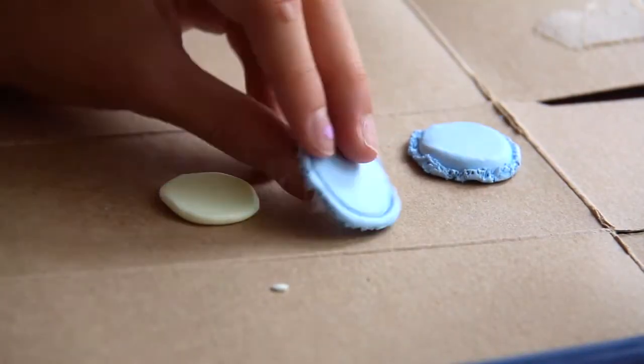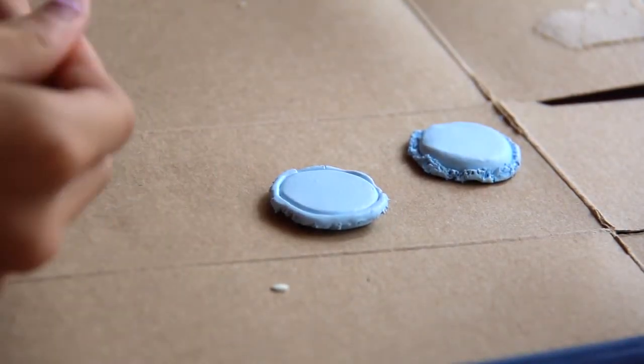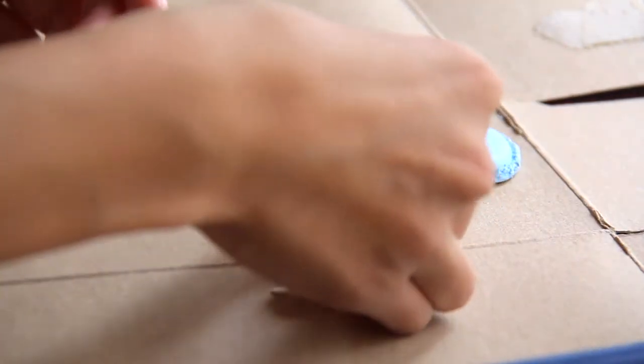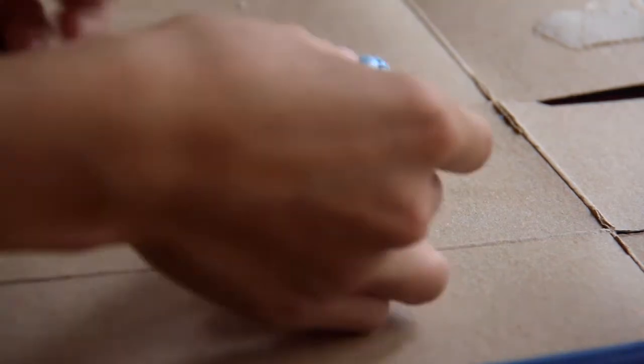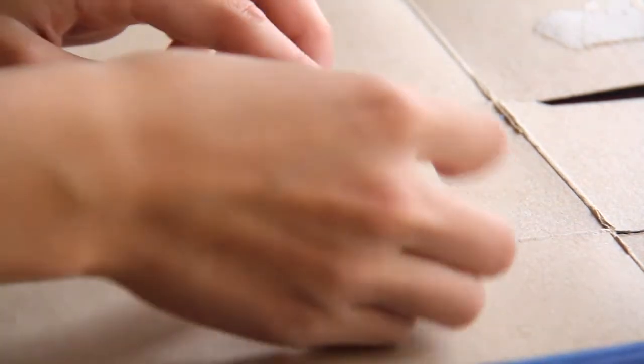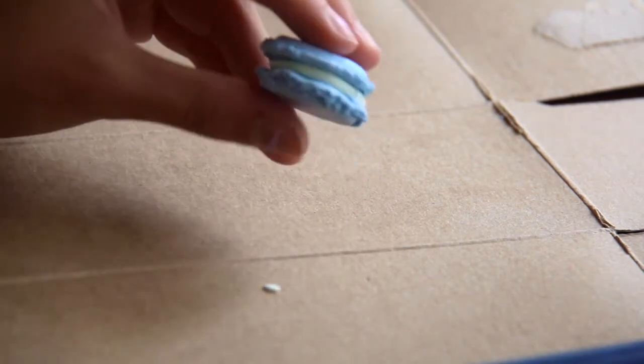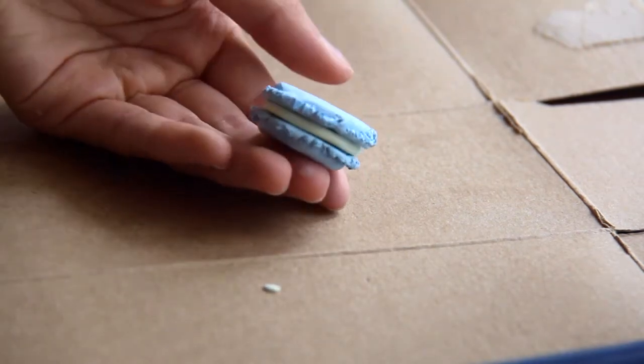Then you're going to flip one of your little macaroon crackers upside down. Then just press the little white layer on top since that's the macaroon filling and the colored balls that we made earlier are the crackers. So then just sandwich that all together. Pretty self-explanatory. And then you're going to bake your macaroon according to the clay package instructions.